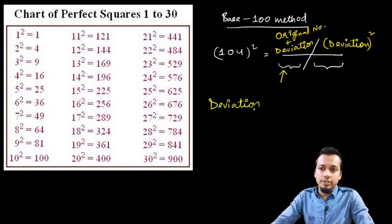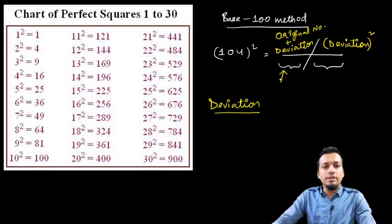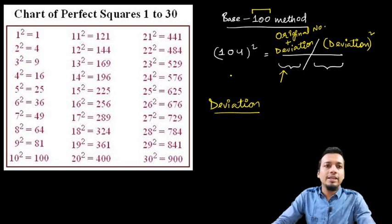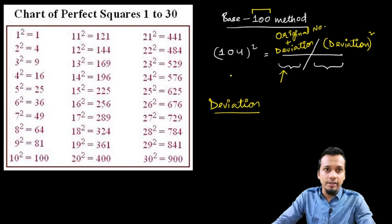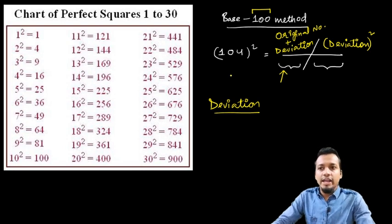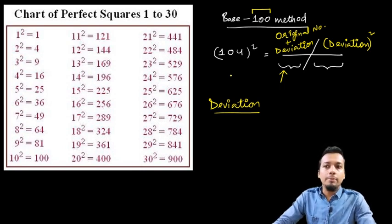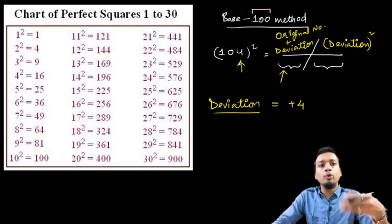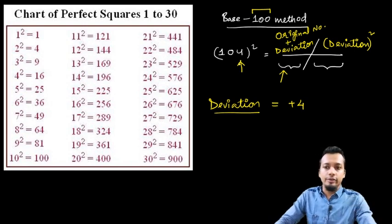What is deviation? Deviation is the difference between the original number and 100 — the difference between the number whose square we are finding and 100. Deviation will be positive if the number is greater than 100, and negative if the number is less than 100. In this case, the deviation is plus 4 because 104 is 4 more than 100.